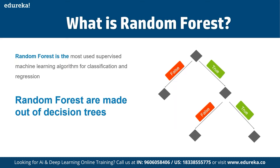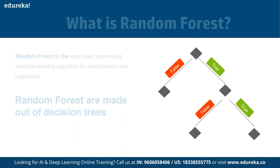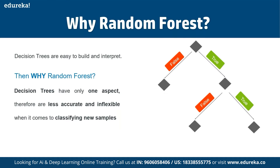As the name suggests, random forest randomly creates a forest with several trees. Generally, the more trees in the forest, the more robust the model is. Similarly, in the random forest classifier, a higher number of trees gives greater accuracy. In simple terms, random forest builds multiple decision trees — called a forest — and combines them to get a more accurate and stable prediction, trained using the bagging method.